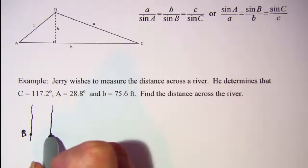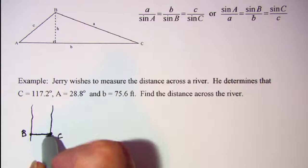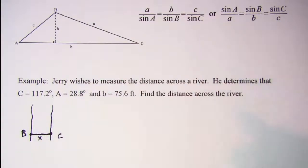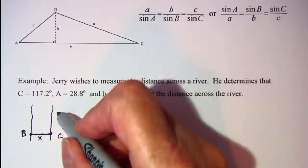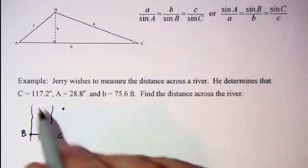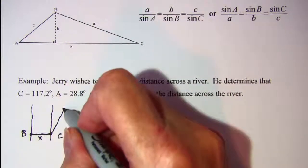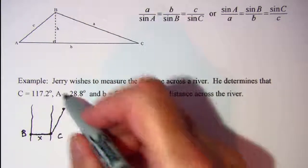C is here, and we're looking for this distance across the river. Point A is over here because angle C is obtuse. So angle C, which is this angle right here.